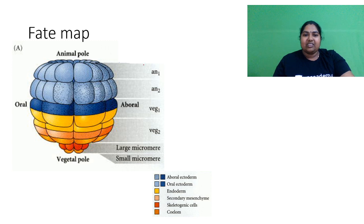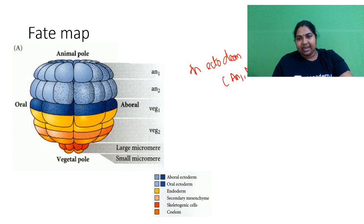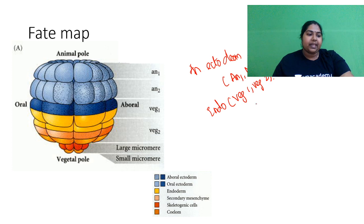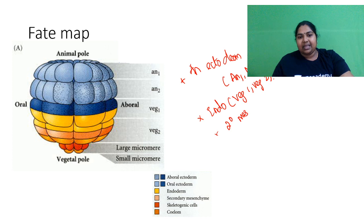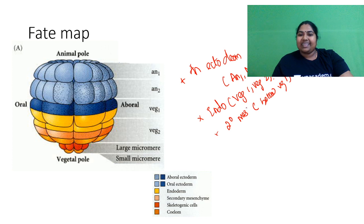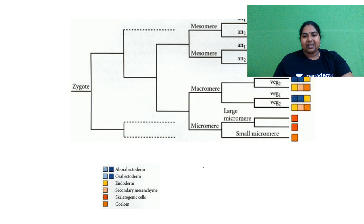So the ectoderm is being formed under animal region 1 and animal region 2. Endoderm — inside, your veg region is there: veg 1 and veg 2 form endoderm. Now where is your secondary mesenchyme? It is lying below veg 1. And then your micromeres — that is forming your skeletogenic cells. So this is the total fate map.